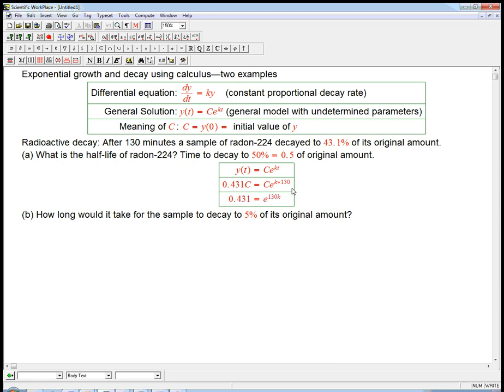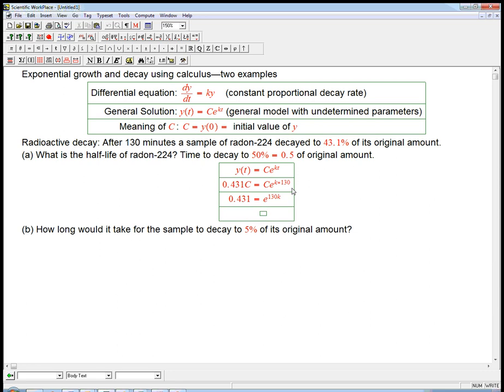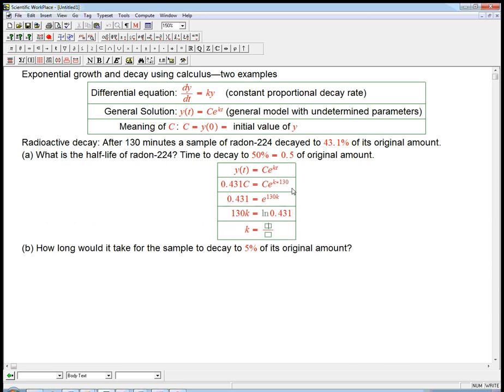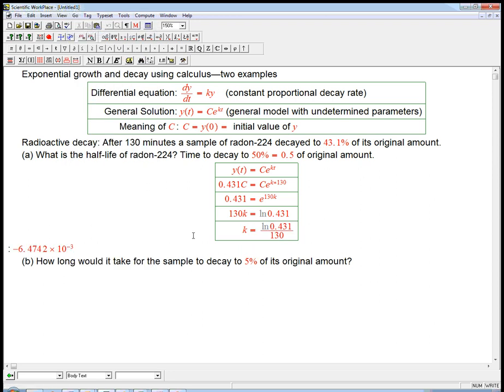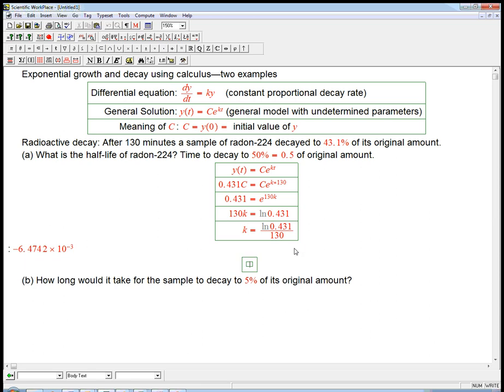And I'm just going to put the 130 in front of the k. And I'm going to take the ln. And so that's 0.431. And then I'm going to divide by 130. And I'll just do that numerically.